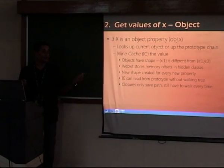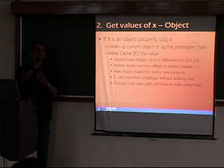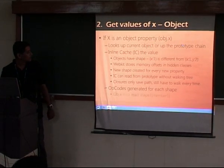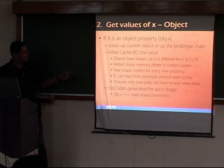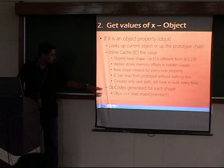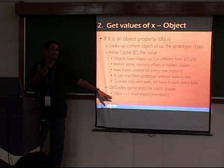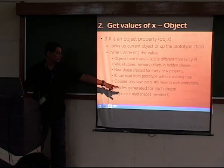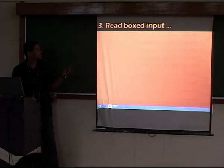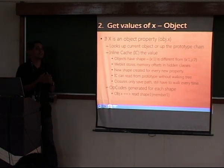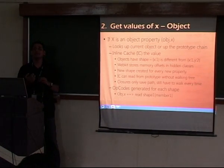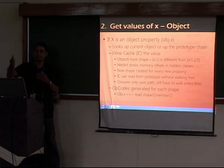So opcodes are generated — something like 'read from this memory location at this offset.' Every shape will know what memory location it's at. But here's the problem: I know where to start reading, but do I really know where to end? When I say obj.x, x could be a string, a number, anything — I don't know whether to stop at 32 bits or 64 bits or something else.